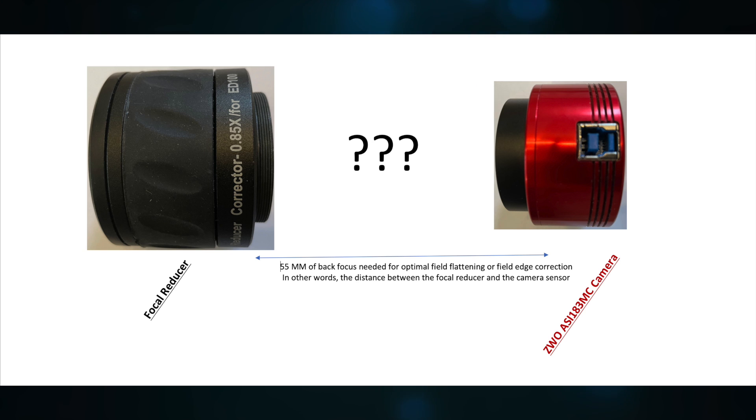And what this is talking about is the distance between the backside of the focal reducer corrector and the actual CMOS sensor in the camera. So why is this 55 millimeters distance important?